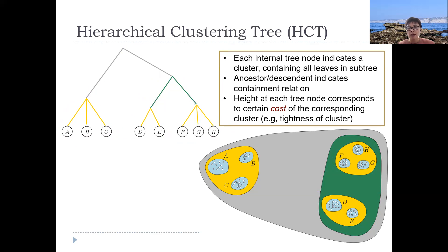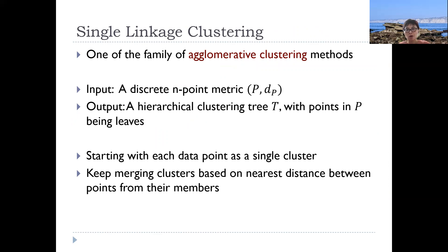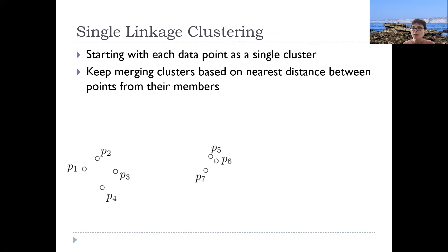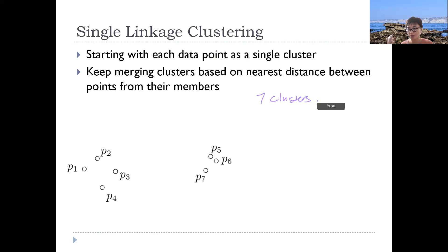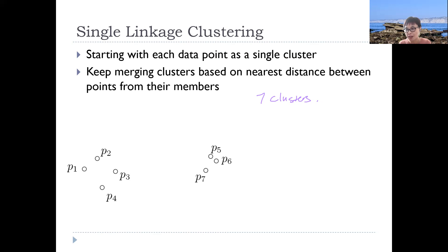It turns out there's a whole family of methods called agglomerative clustering, which builds clusters bottom up. The most popular one is called single linkage clustering. The idea is: at the beginning, everyone is its own cluster. Here in this example I have seven points, so at the beginning I have seven clusters — that's the most refined level. Then I keep merging clusters based on the nearest neighbor, the cheapest way to merge them.